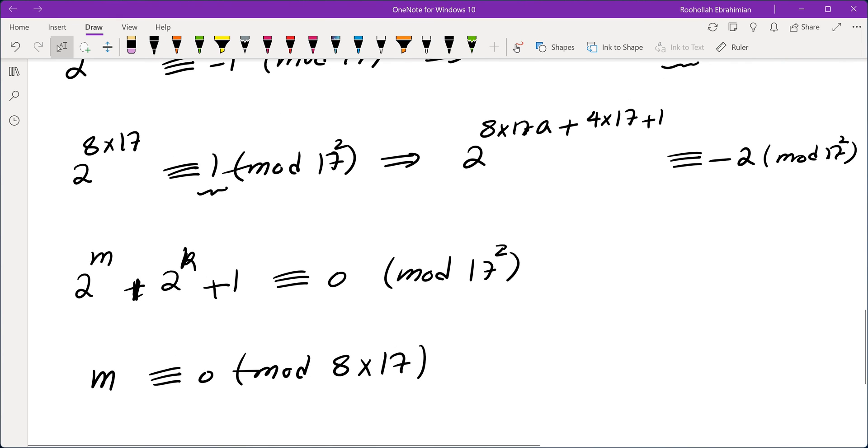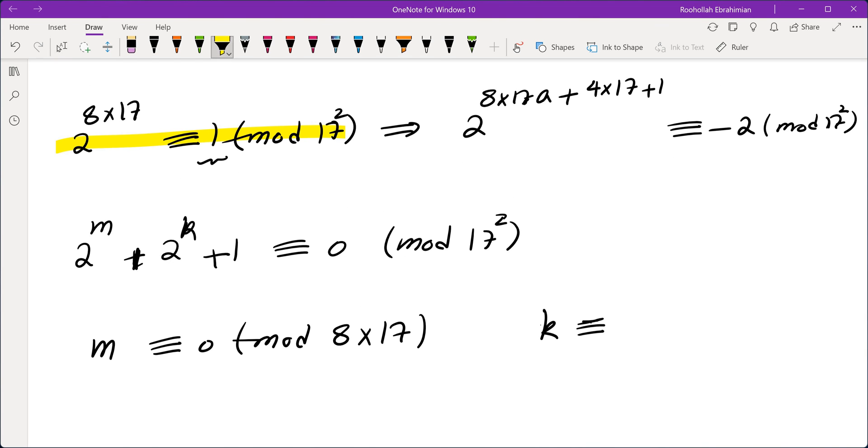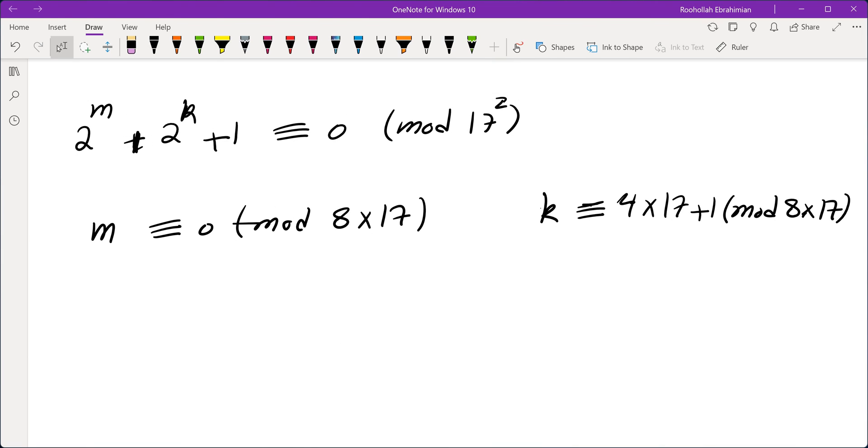which is what I have up here. And I'm going to make sure that k is also, and I get that from this exponent. It is 4 times 17 plus 1 mod 8 times 17. If I do that, and I also made sure that m is 2 mod 3, and k is 1 mod 3,